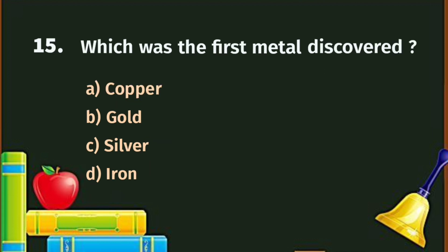Question number 15. Which was the first metal discovered? A. Copper, B. Gold, C. Silver, D. Iron. The correct answer is A - Copper.